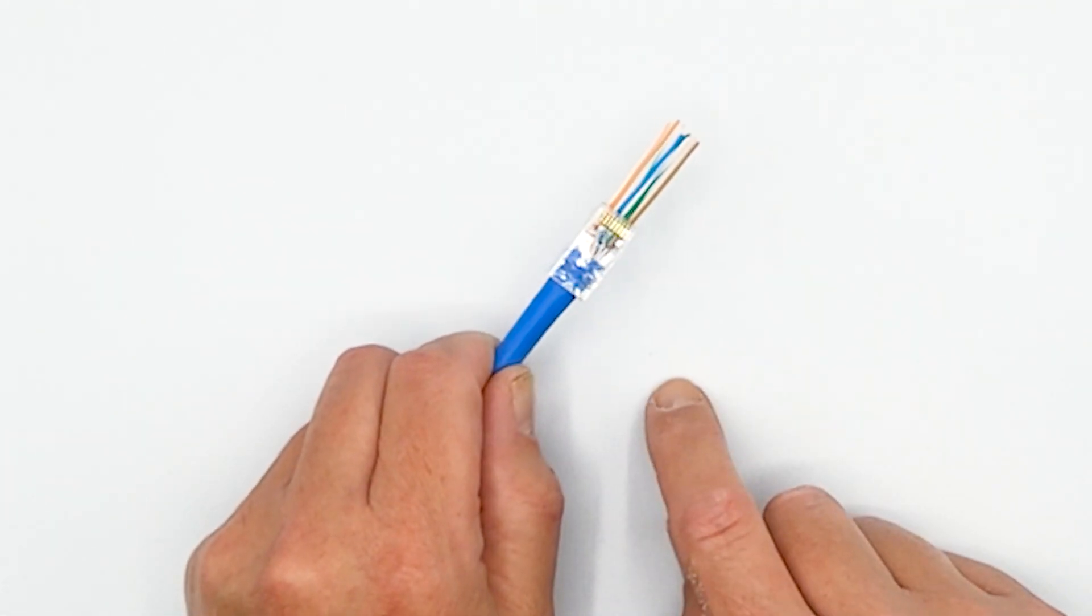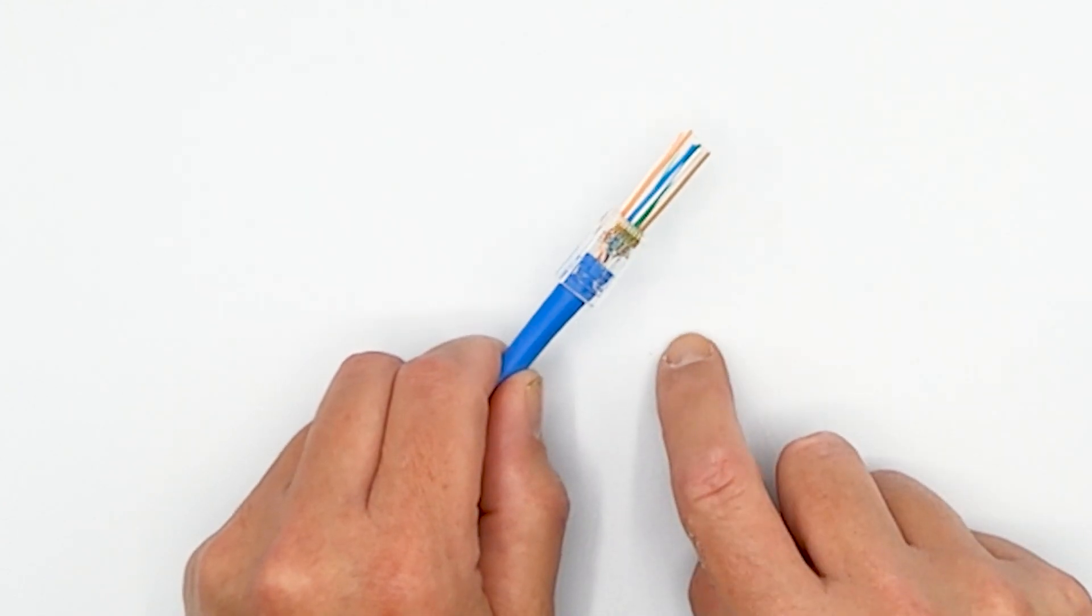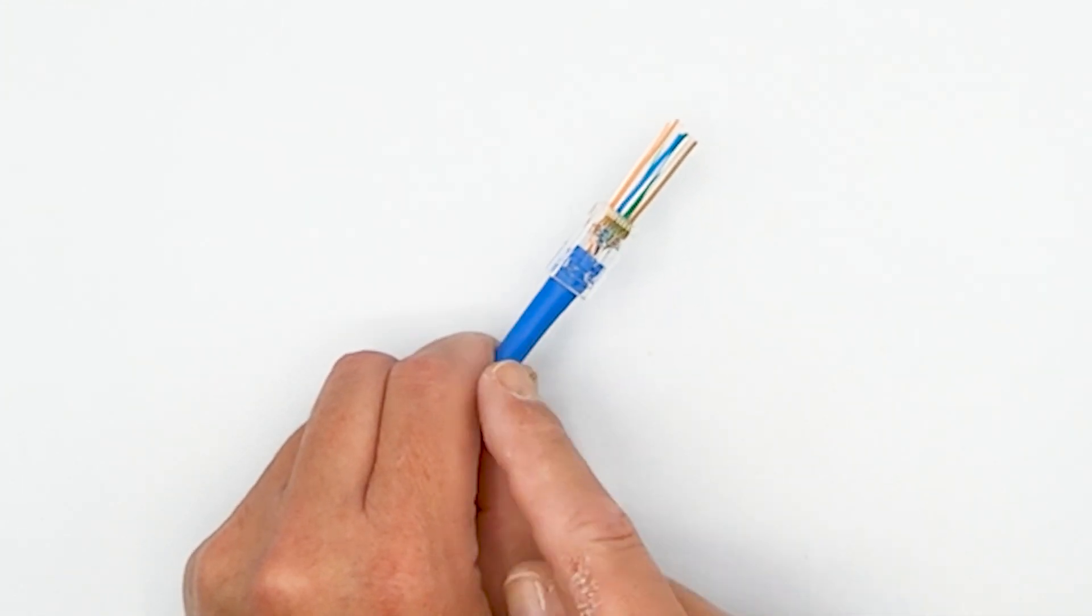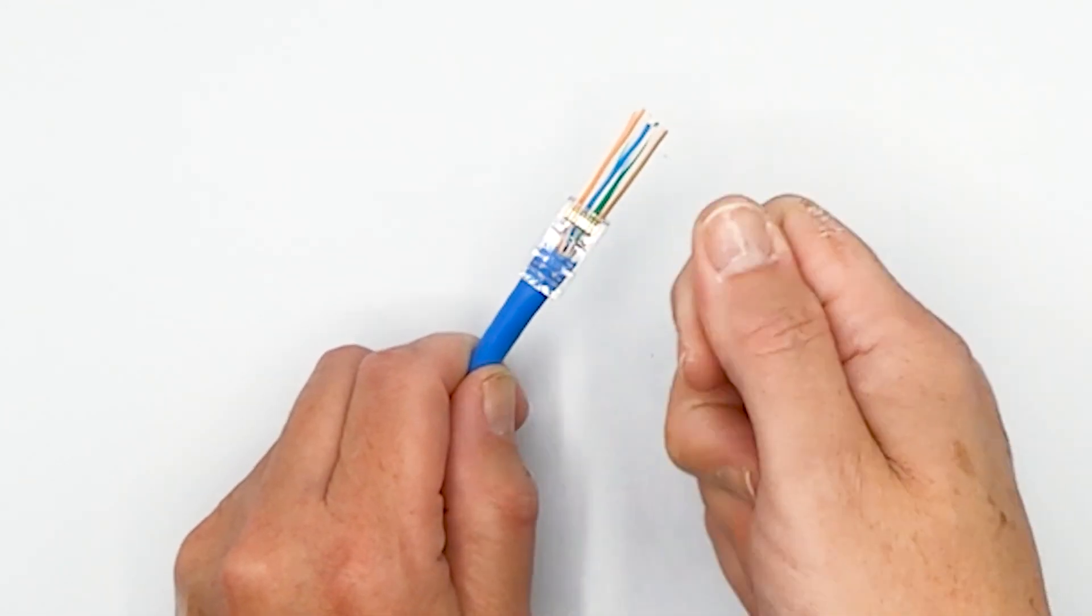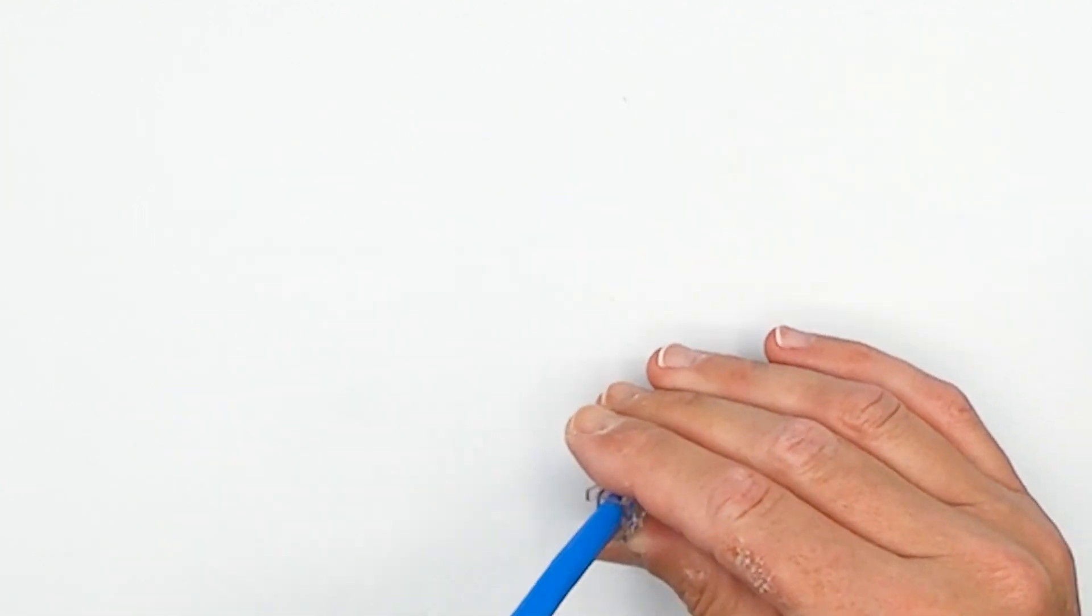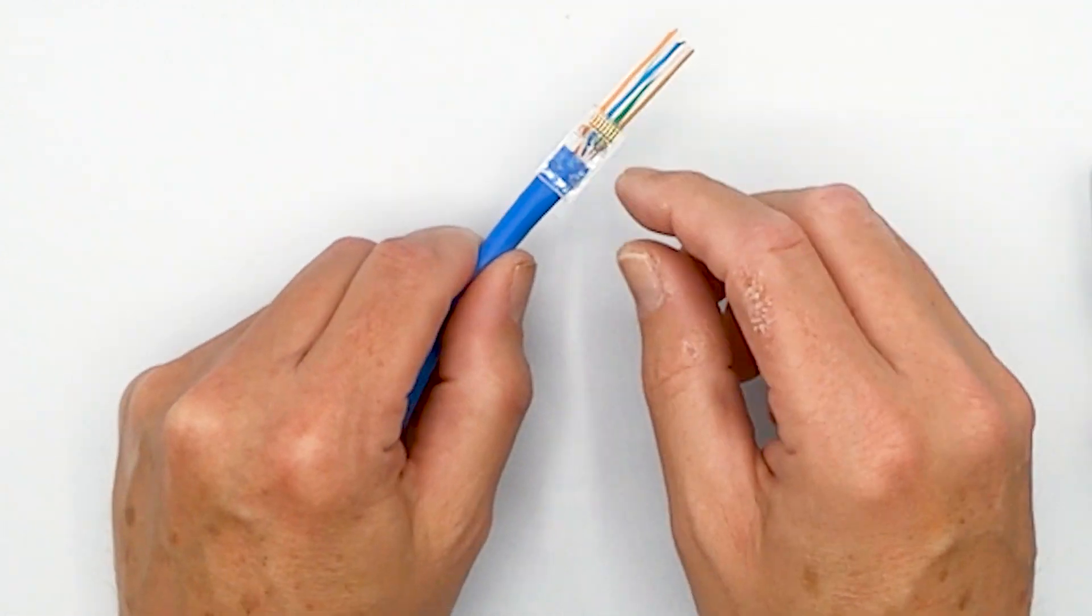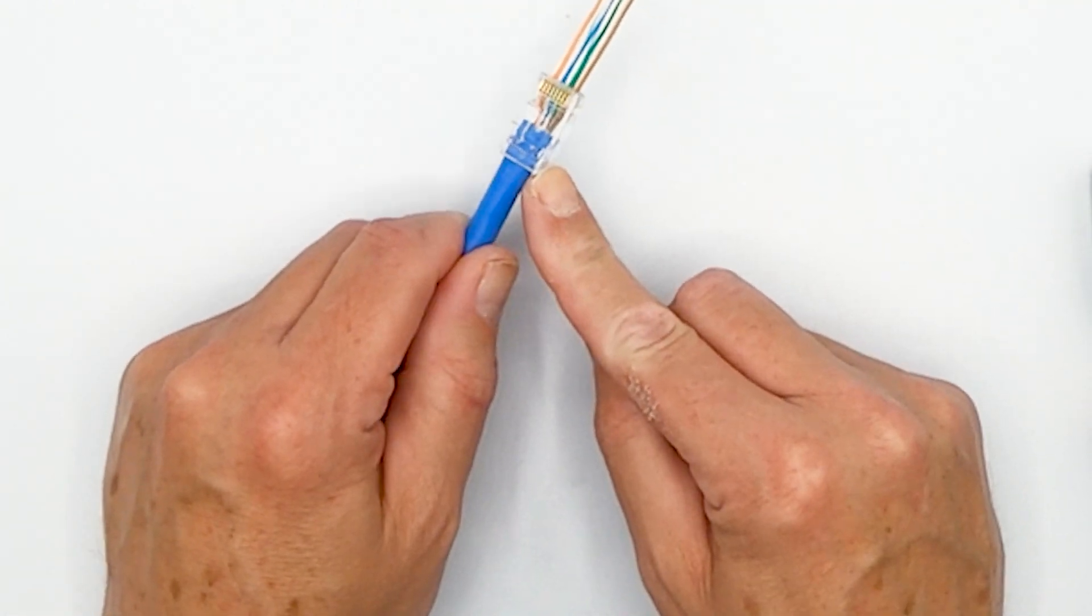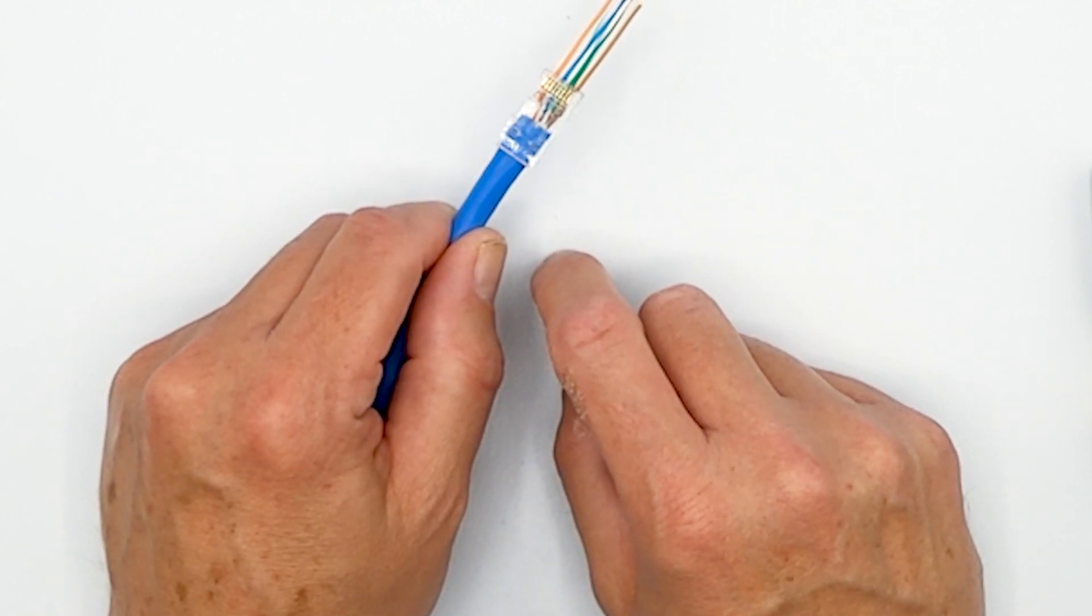It has to have eight positions and eight contacts. It has to have a strain latch or some other attachment mechanism to make sure that the cable can't pull out from the plug. But as far as the inside is concerned, you can only make plastic so thin and have it still work. So, there is an upper limit to exactly what an RJ45 plug will be able to accept.